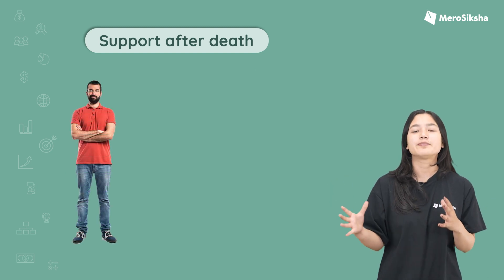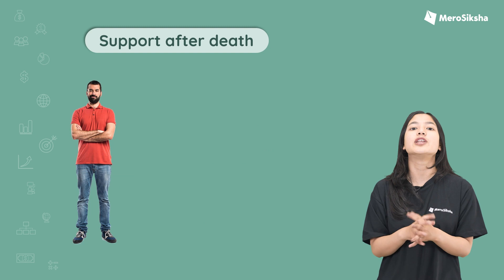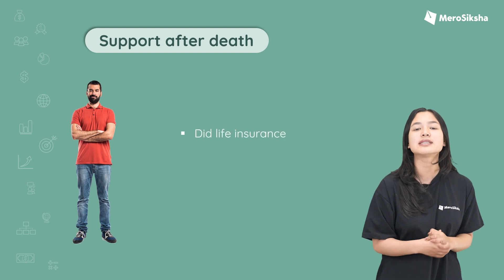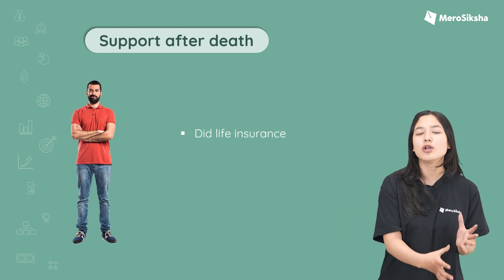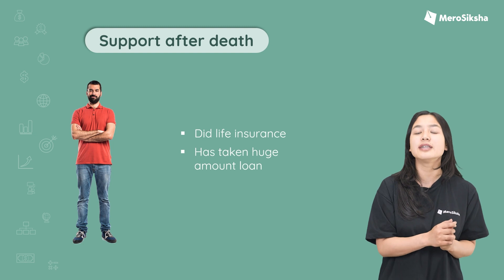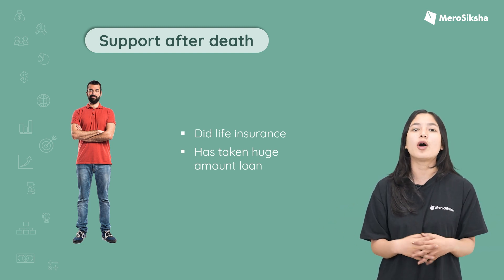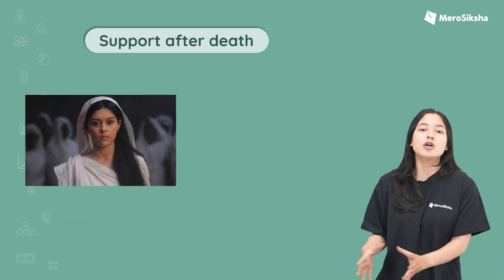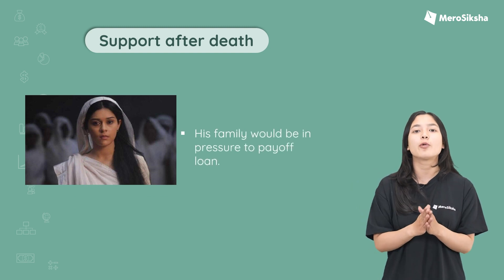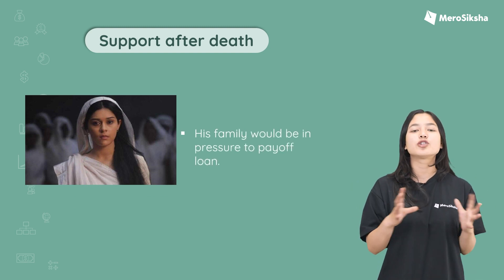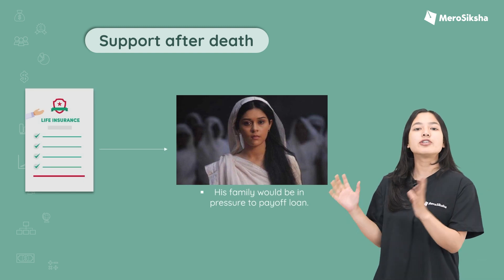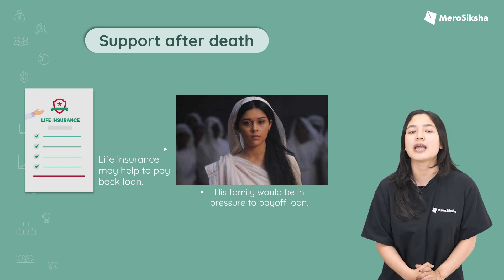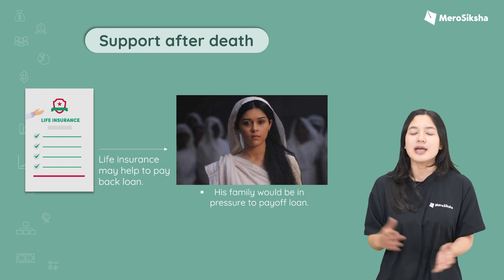For example, Ram has to support his family, so he takes out a life insurance policy. Ram has financial obligations including loans and credit. During that time, life insurance is able to provide support — this is a key feature of life insurance.